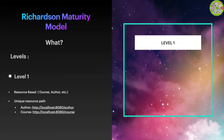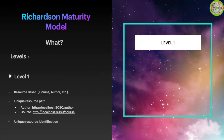If you want to fetch the details for the author, that can be your domain slash author. So in this example, for the author resource we are using slash author, and for the course resource we are using slash course. Here, course and author are the unique names for individual resources.